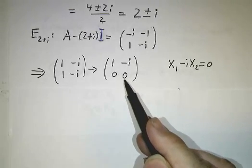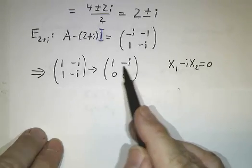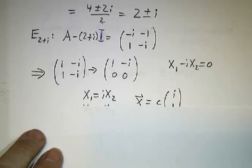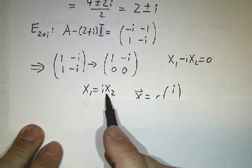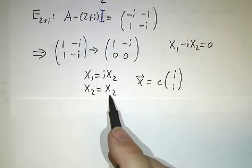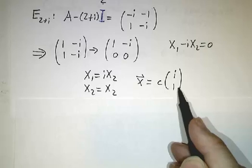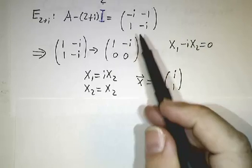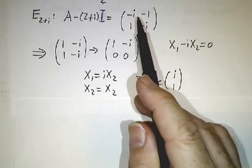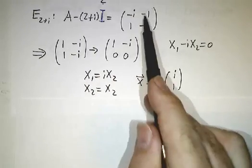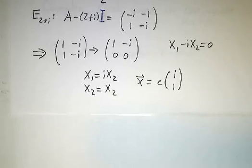And we're looking for the null space, so each row gives you an equation. x1 - ix2 = 0. In other words, x1 = ix2. And of course, x2 is itself. So our vector is a multiple of (i,1). That's how you get the eigenvectors. Just like with real eigenvalues, you want to take A - λI, row reduce it, and find a basis for the null space.